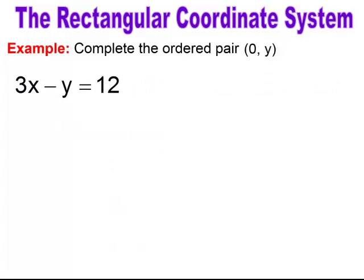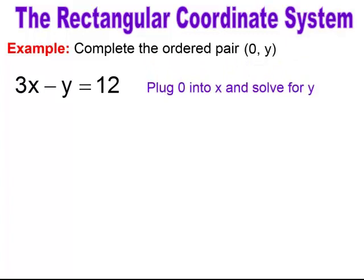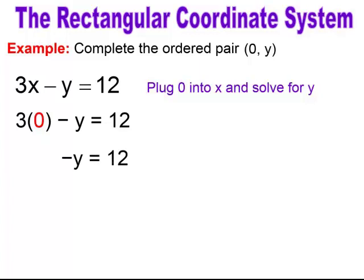In another example, I'm given my X-value and have to find my Y-value. I take the value given for X, substitute it into the equation, and find my Y. 3 times 0 is 0, so I'm left with a negative Y equals 12. I divide through by negative 1, and I get my Y-value equals negative 12.